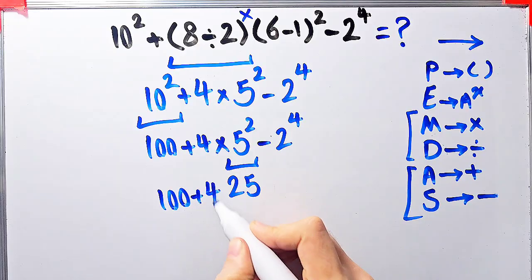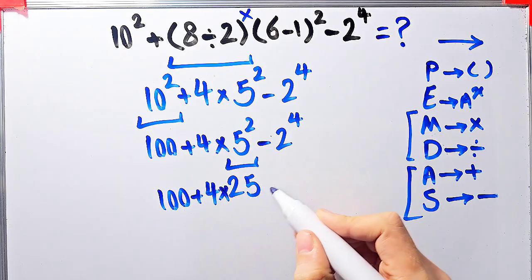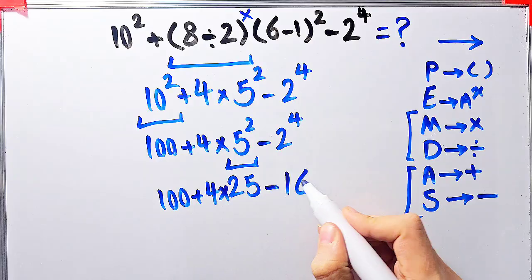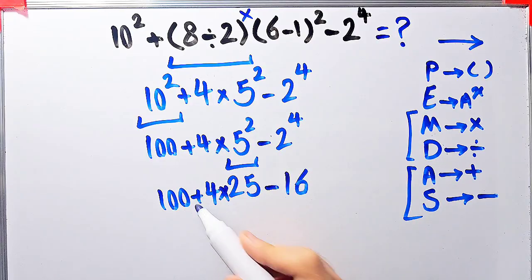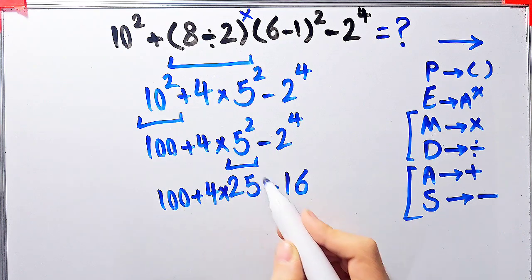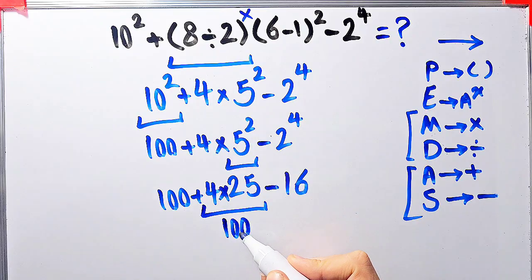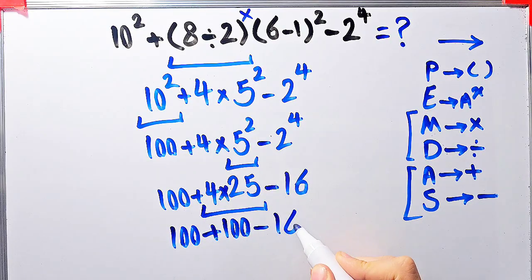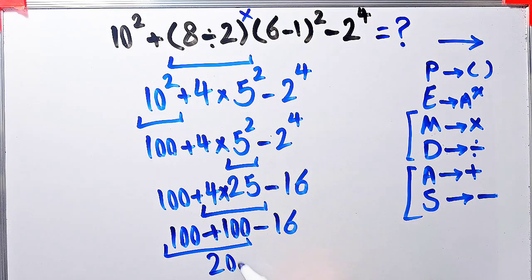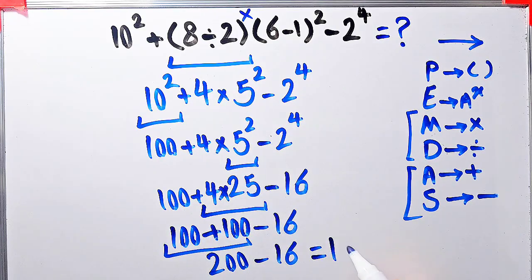Now we have 100 plus 4 times 25, then minus 2 to the power of 4 which equals 16. We have addition, multiplication, and subtraction. First we do the multiplication: 4 times 25 equals 100. Now we have 100 plus 100, then minus 16. 100 plus 100 equals 200, so now we have 200 minus 16.